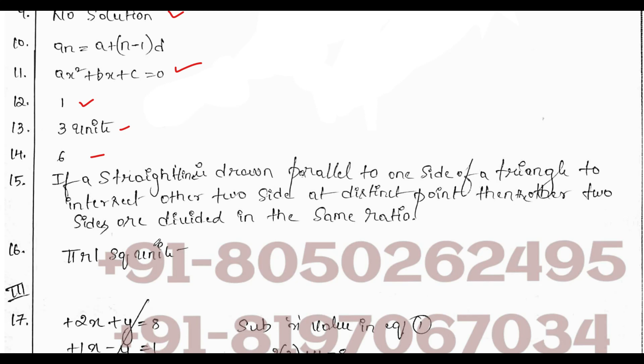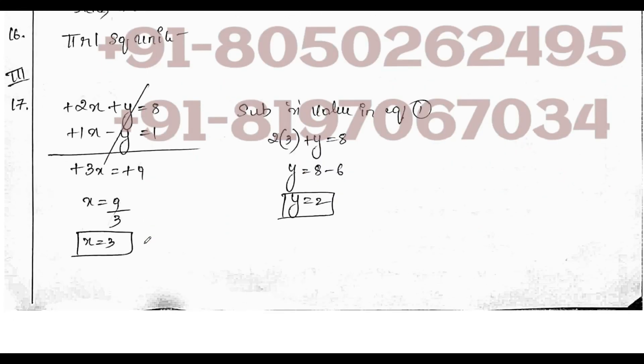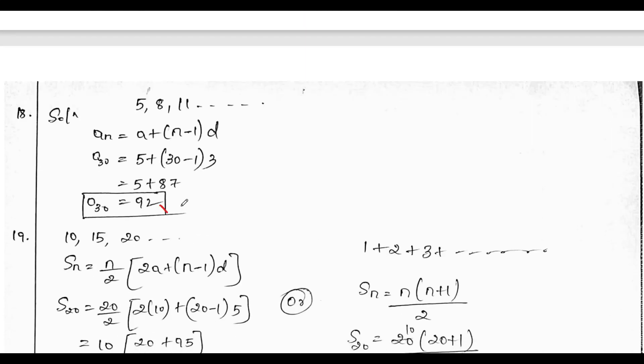Surface area of cone is pi R. Next, for 17th question, by elimination method, we get x equals 3, y equals 2. Next, the 30th term of the AP 5, 8, 11 is 92.